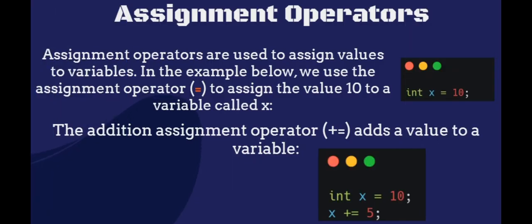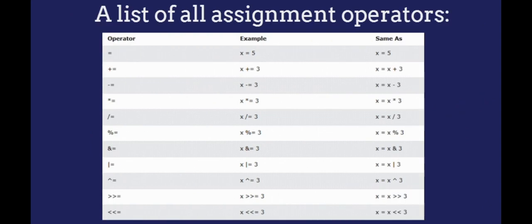Assignment operators are used to assign values to variables. In the example below, we use the assignment operator equals to assign the value 10 to a variable called x. The addition assignment operator plus equals adds a value to a variable. This is a list of all assignment operators.